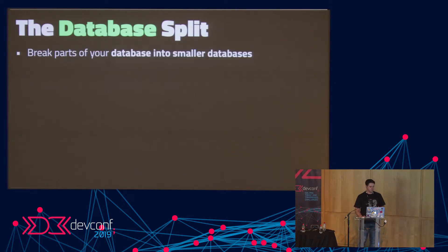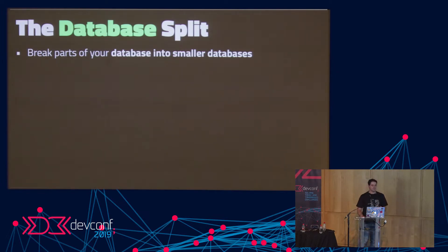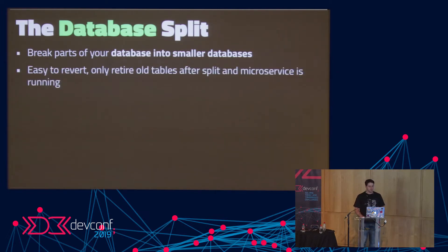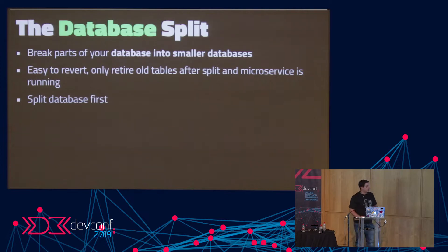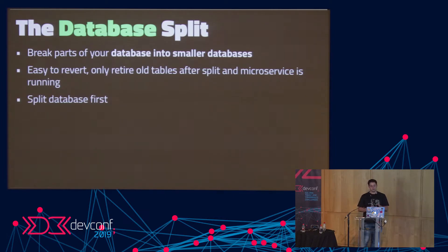How do we actually split the database? I would recommend breaking parts of your database into smaller databases — it's easy to revert because if something goes wrong, you can simply remove the new tables and return to your existing schema. Generally when moving from a monolith to a microservice, I would recommend splitting the database first, so that your microservice has the domain knowledge it needs.